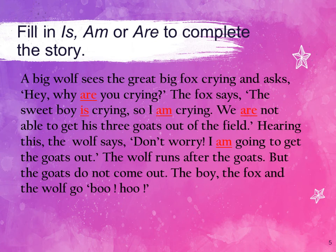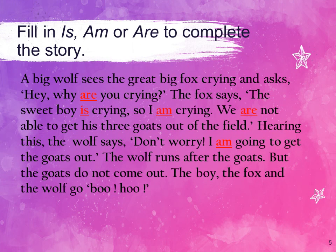Hey, why dash you crying? — We use are with you: hey, why are you crying? The fox says the sweet boy dash crying — sweet boy is singular, so: the sweet boy is crying. So I dash crying — we use am with I: so I am crying. We dash not able to get his three goats out of the field — we is plural, so: we are not able to get his three goats out of the field. I dash going to get the goats out — I am going to get the goats out.